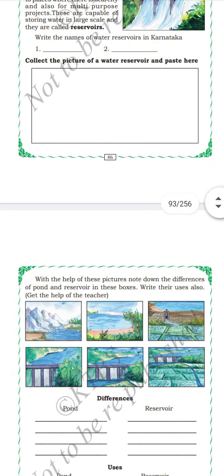Ponds store less amount of water, while reservoirs store large amounts of water. Ponds do not have many uses, but reservoirs are multi-purpose dams used for power generation and water supply for agriculture.